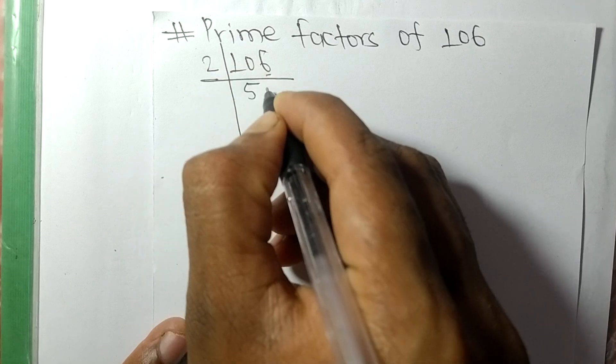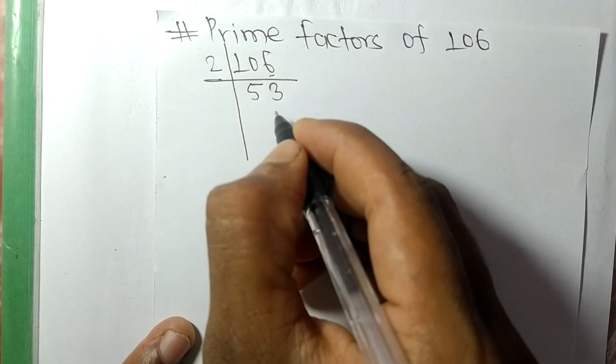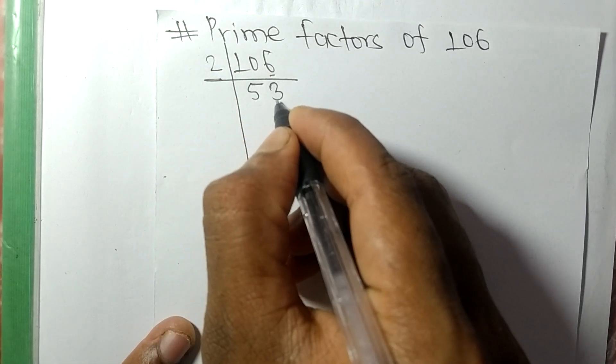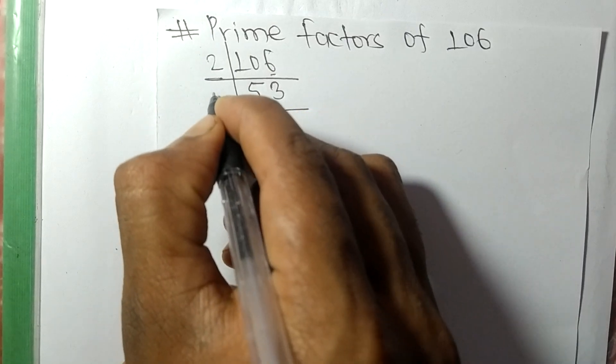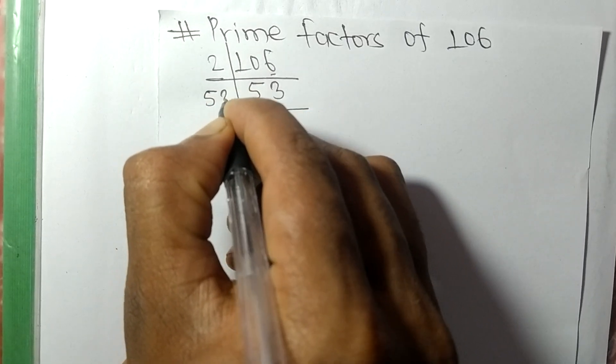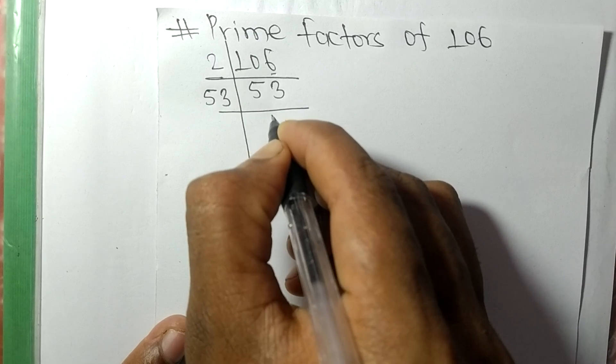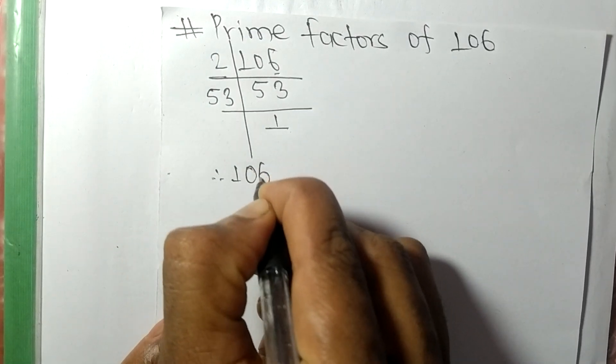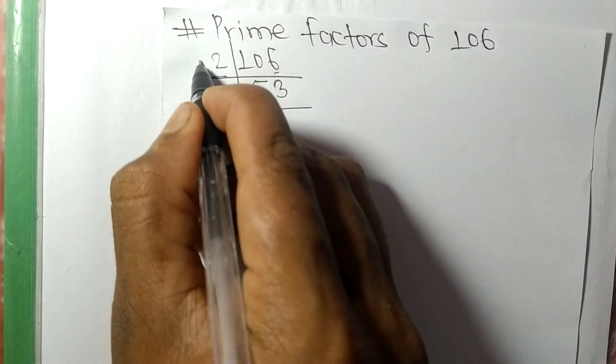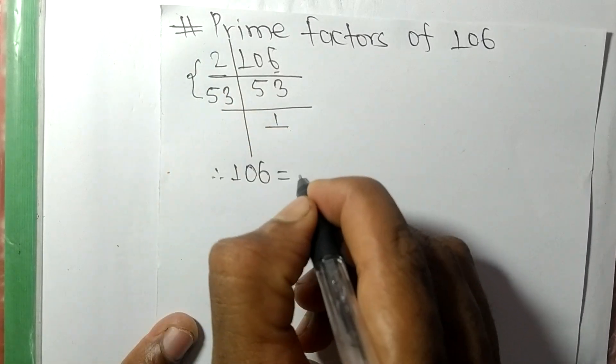So now we have 53 which is a prime number. So 53 is divided by 53 itself and we get here 1. So 106 is equal to, from this side, it is 2 times 53.